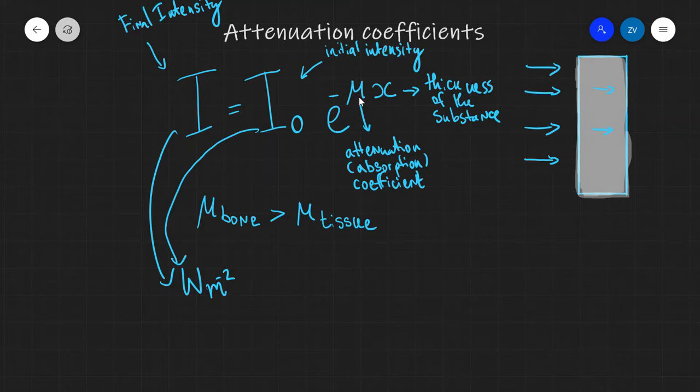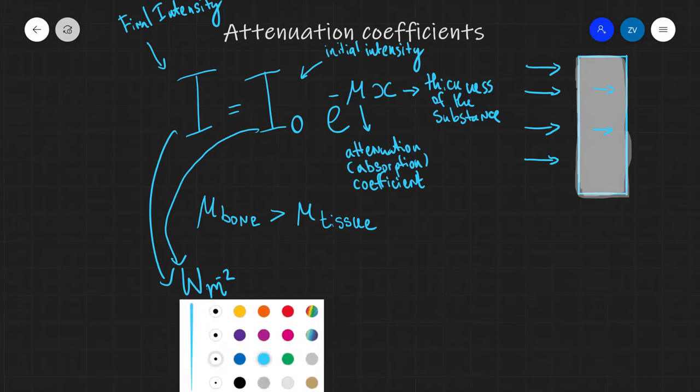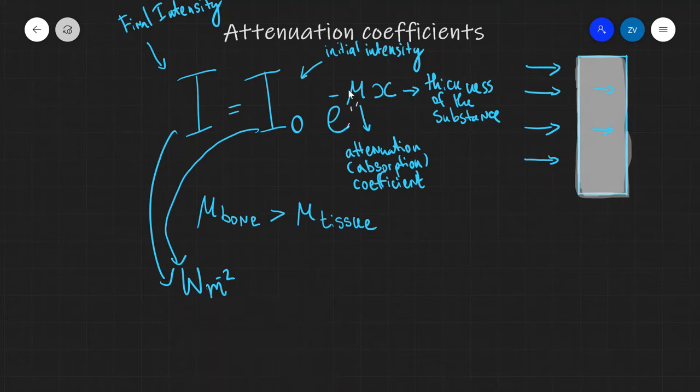And the unit of μ, this Greek letter is known as mu, the SI unit is meters to the power of minus one. So μ, the attenuation coefficient, has units of m⁻¹, and the thickness has units of meters. So overall the units here cancel out.